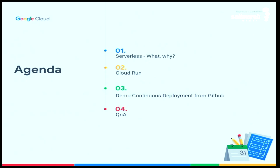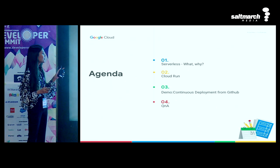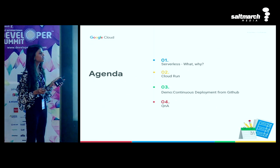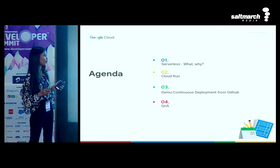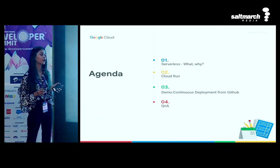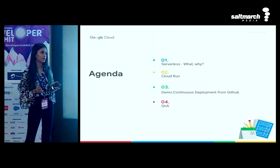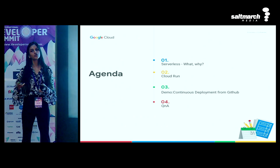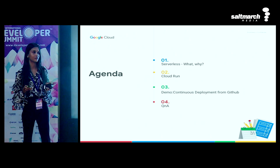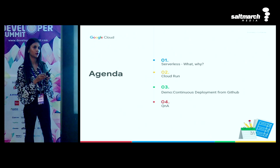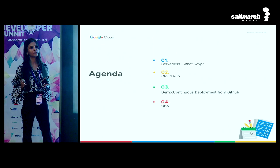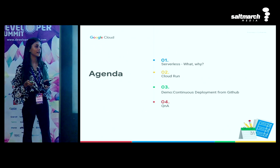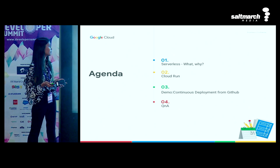Here's a quick look at the agenda. We'll have a brief view of the what and why of serverless. Then we'll do a deep dive on Google's managed compute platform, Cloud Run. Then I'll show you how you can do continuous deployment with GitHub on Cloud Run - so whenever you push your code, the latest code is available in your production environment without you having to do anything. We'll also try to leave some time for Q&A, and I'll be taking questions through the demo as well.